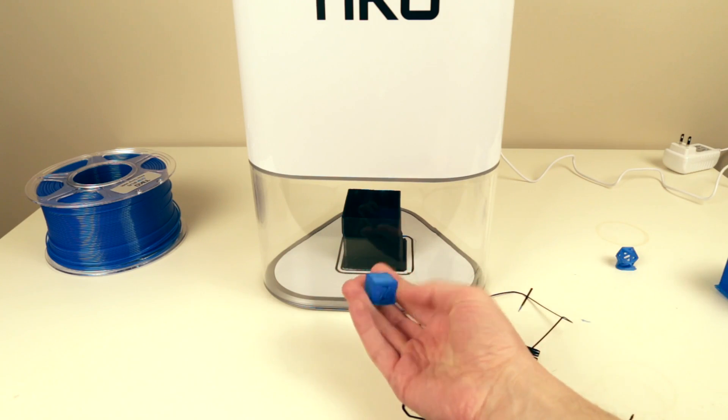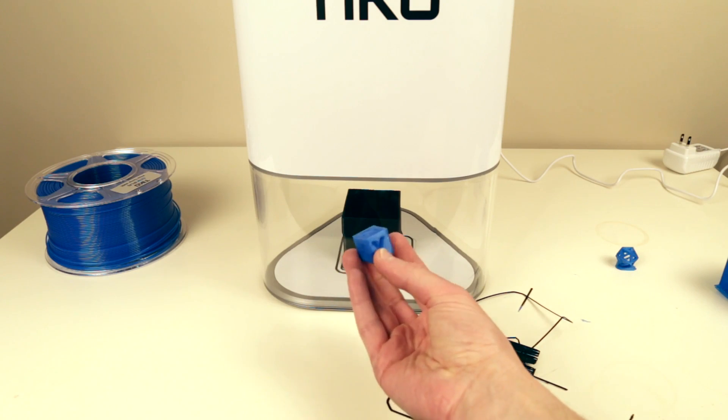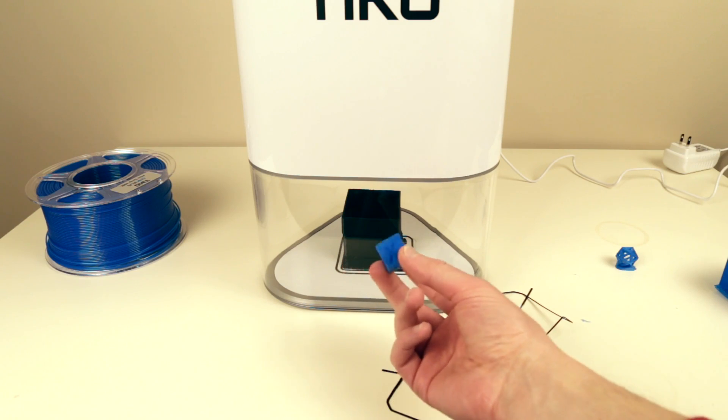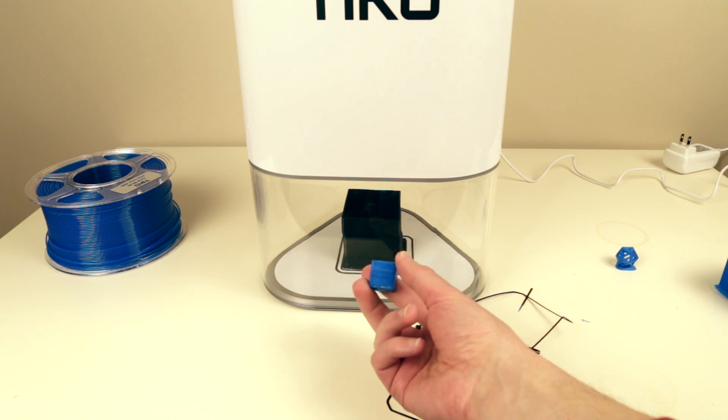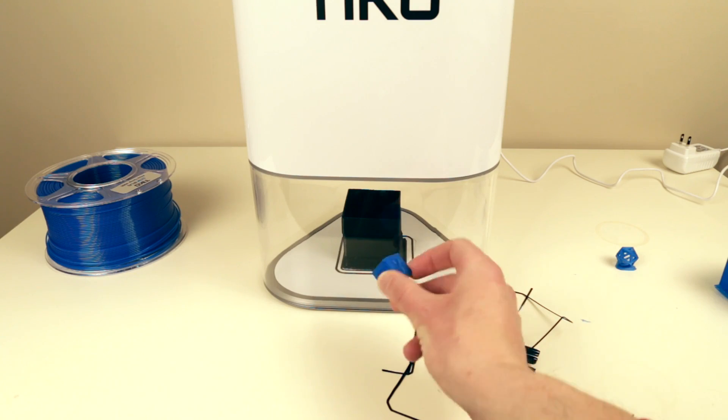So this is calibration cube. Actually turned out to be not too bad. And for some stupid reason it turned out to be smaller than the original model. It's supposed to be one inch but somehow it's like three quarter or something.